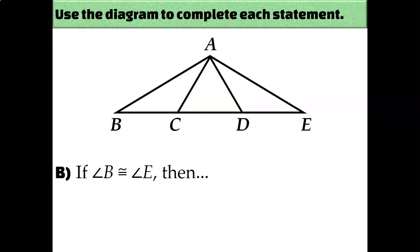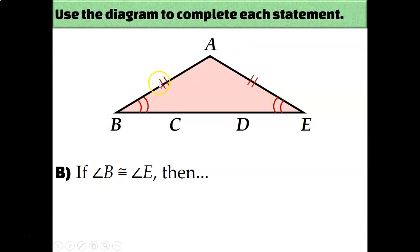What if angle B is congruent to angle E? In this case, I'm focusing on the entire triangle — triangle ABE is an isosceles triangle. It has two congruent angles, and therefore it must have two congruent sides — the ones across from those angles. Across from angle B is side AE, and across from angle E is side AB, so AB is congruent to EA.